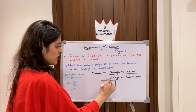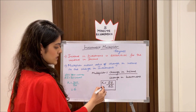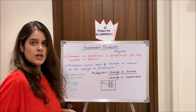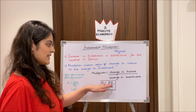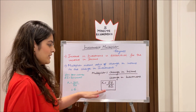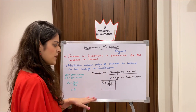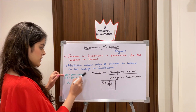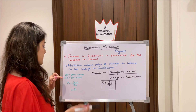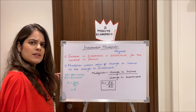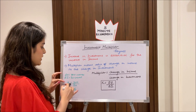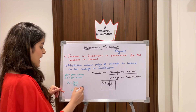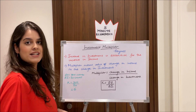The investment multiplier, symbolically, is k = ΔY / ΔI, where Y always stands for income in economics. For example, if the change in income is 300 crores and the change in investment is 50 crores, we calculate: k = 300 / 50, so the value of the multiplier is 6.